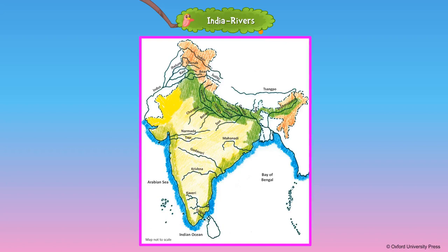River Bhagirathi starts at the foot of Gangotri Glacier at Gomuk. It is joined by River Alaknanda in Devprayag and flows as River Ganga from here.